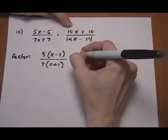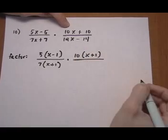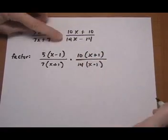Take out a 10, times X plus 1, times X minus 1. And take out a 14, leftover is X minus 1.